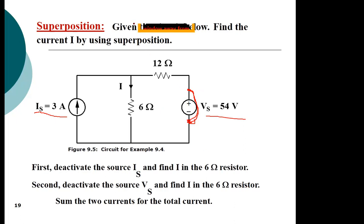As you work through the problem, you use one source after deactivating the other, then switch. When removing a current source, just remove it and leave an open connection. When removing a voltage source, remove it and replace where it was connected with a short circuit — a path of zero resistance. That is a very important thing to take note of.